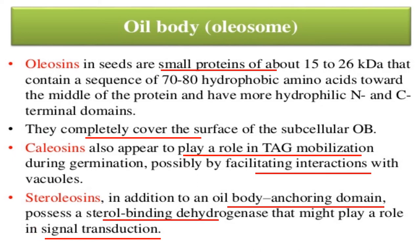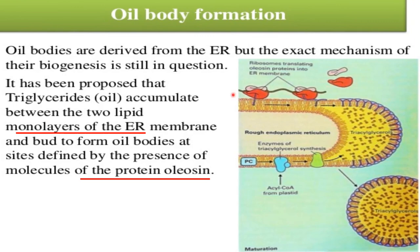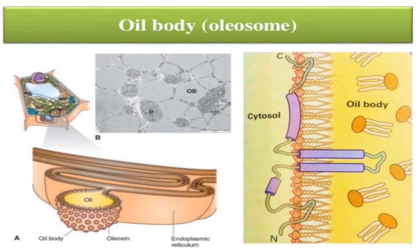Steroleosin, in addition to oil body anchoring, possesses a sterol-binding hydrogenase that might play an important role in signal transduction. Oil bodies are derived from the endoplasmic reticulum, but the exact mechanism of their biogenesis is still in question. It has been proposed that triacylglyceride accumulates between the two lipid monolayers of the ER and buds to form an oil body at sites defined by the presence of oleosin protein.